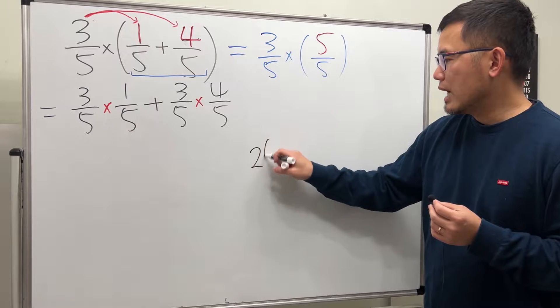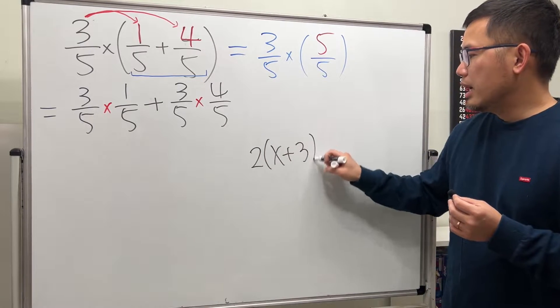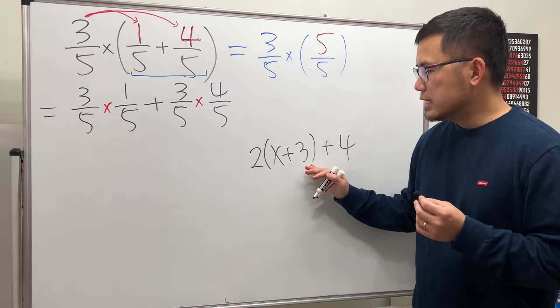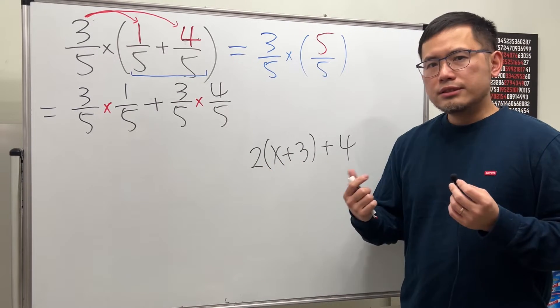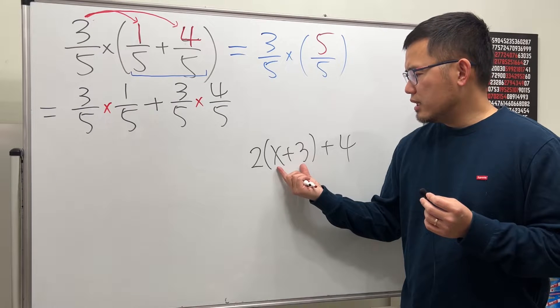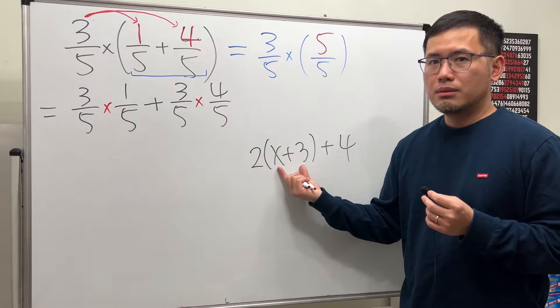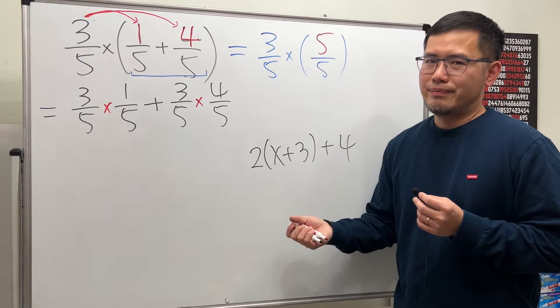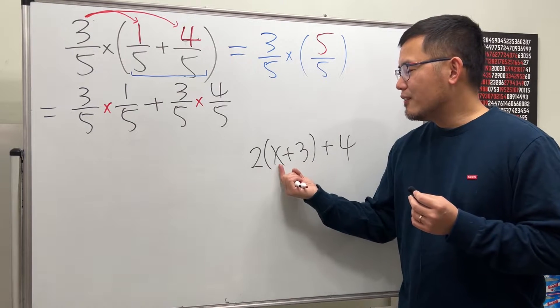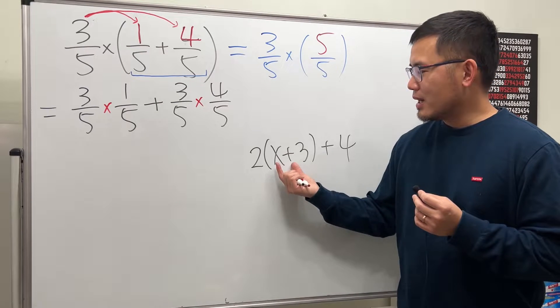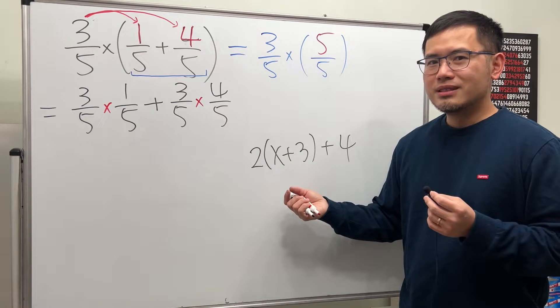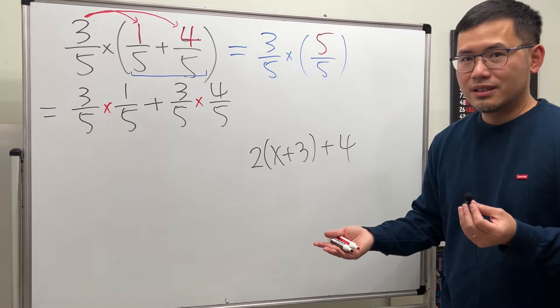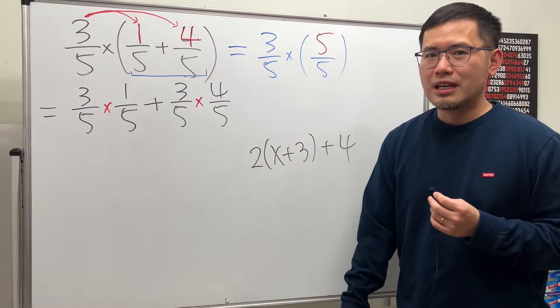The idea for distributive property is the following. Let's say if you have 2 times x plus 3, and after that, you have, say, plus 4. So, let's just focus on this part right here. I just told you that, right? We should just look at the inside of the parentheses and try to do that first. But the deal is, x plus 3. Can we combine them? No. They are different terms. Once we run into algebra, you know we will get different terms. If we cannot combine these two terms, it seems that we are stuck. But this is where the distributive property comes in.